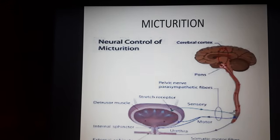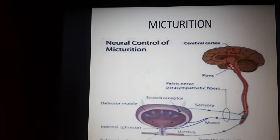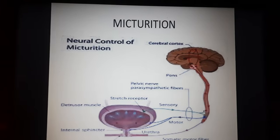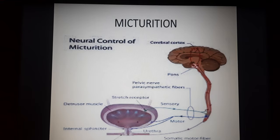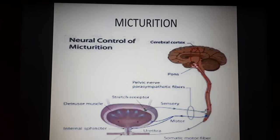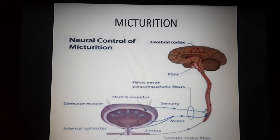Micturition is totally controlled by the brain. Gradual filling of the urinary bladder causes stretching; stretch receptors in its wall send impulses to the central nervous system (CNS). The CNS passes on motor messages causing contraction of smooth muscles of the bladder and simultaneously relaxation of the urethral sphincter, resulting in micturition — the release of urine. Various parameters in urine can also provide clinical diagnosis.